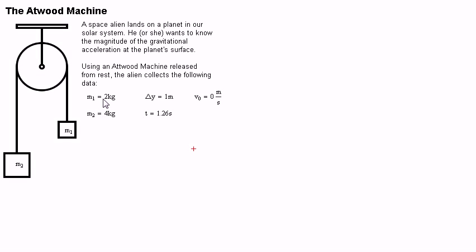The first mass is 2 kilograms. The second mass is 4 kilograms. The distance that the masses travel through is 1 meter. The time it takes to travel through that 1 meter is 1.26 seconds. And the V-naught is written as 0 meters per second.